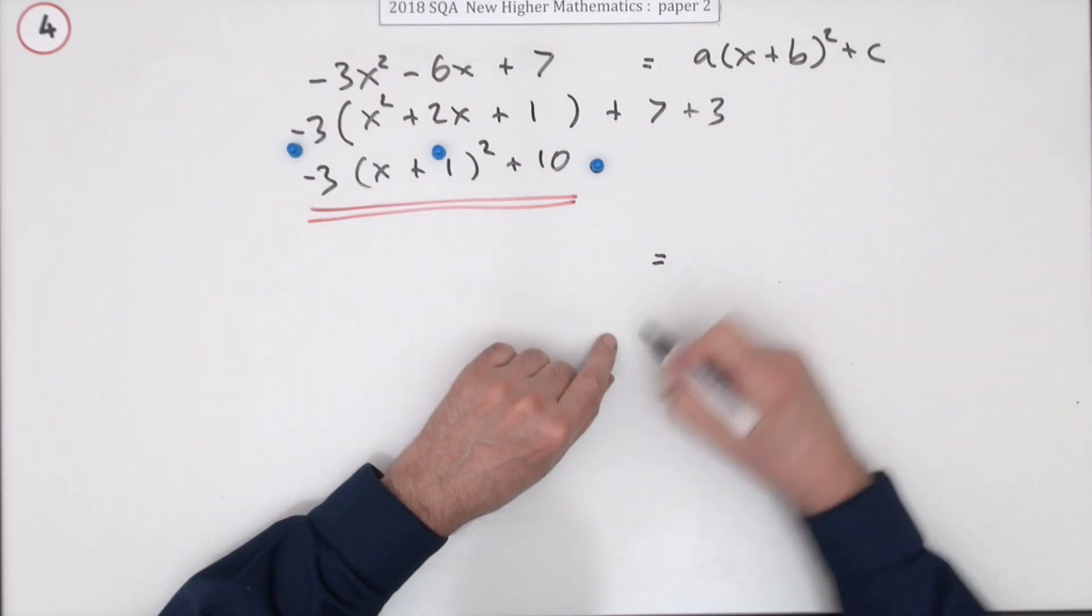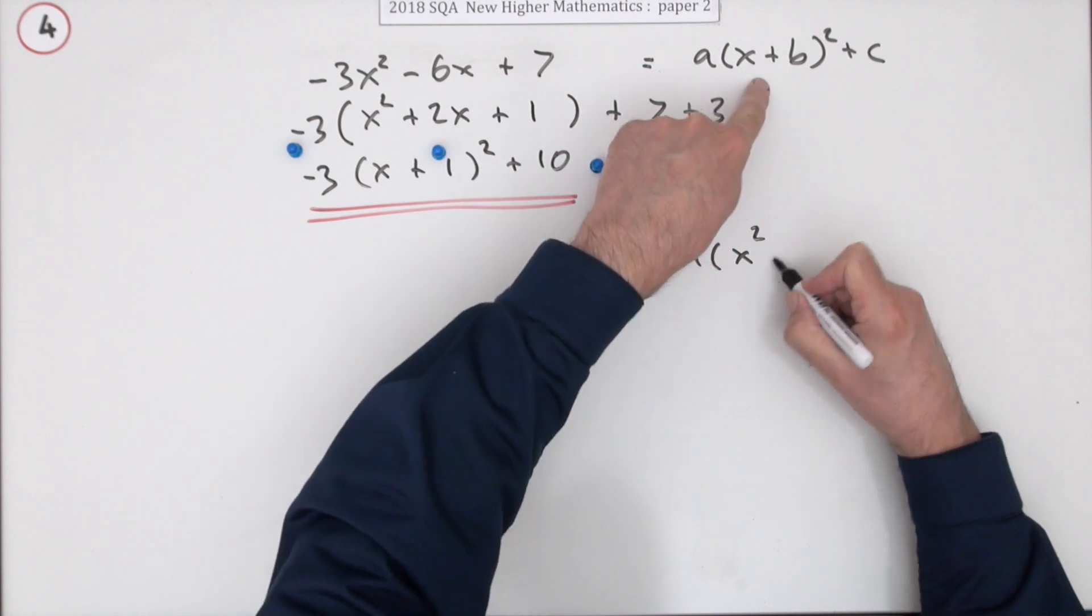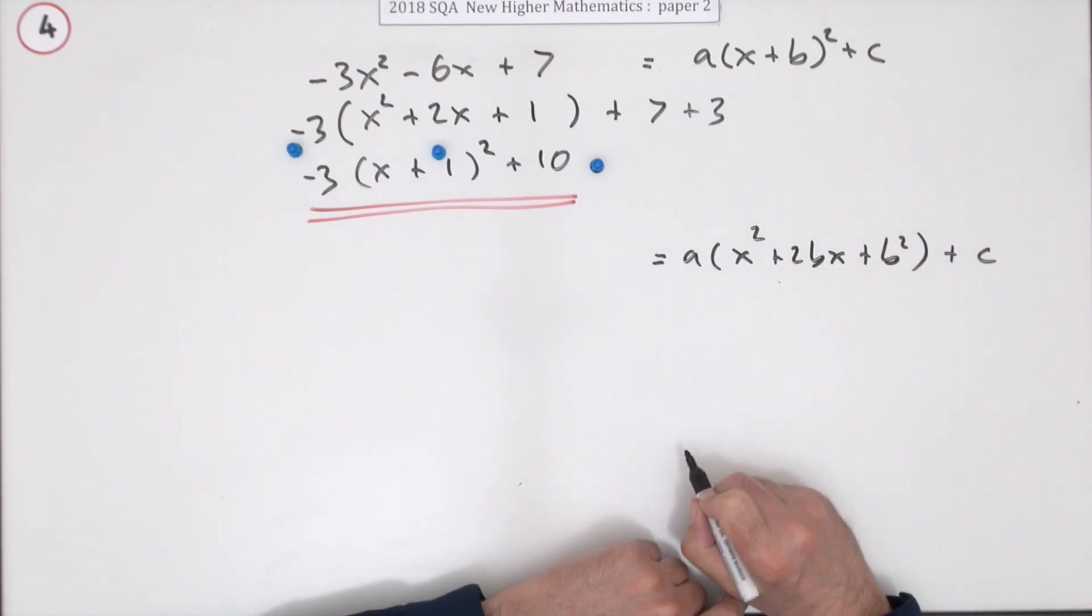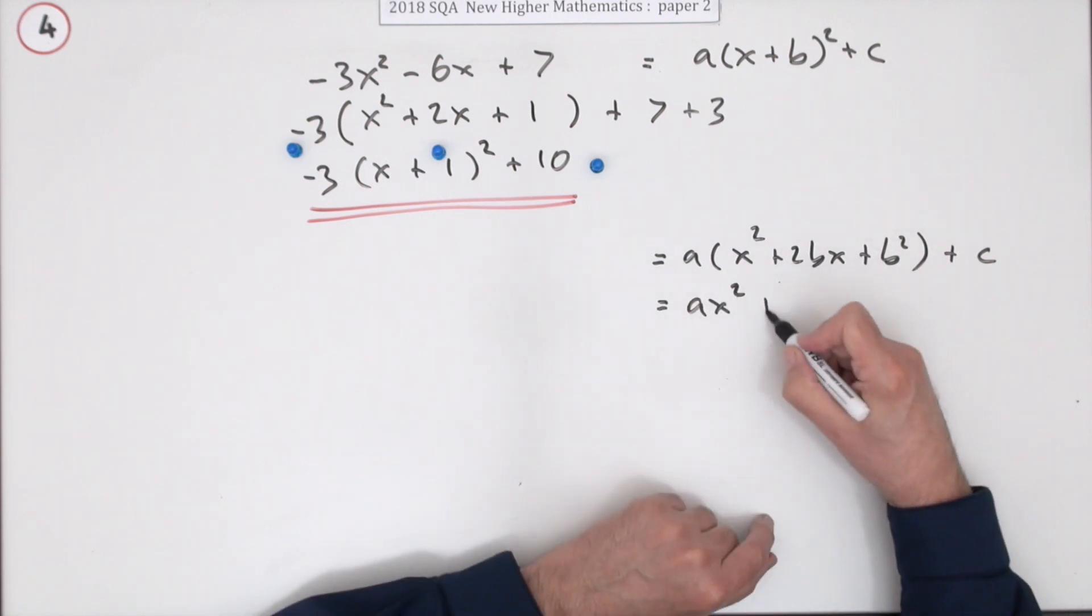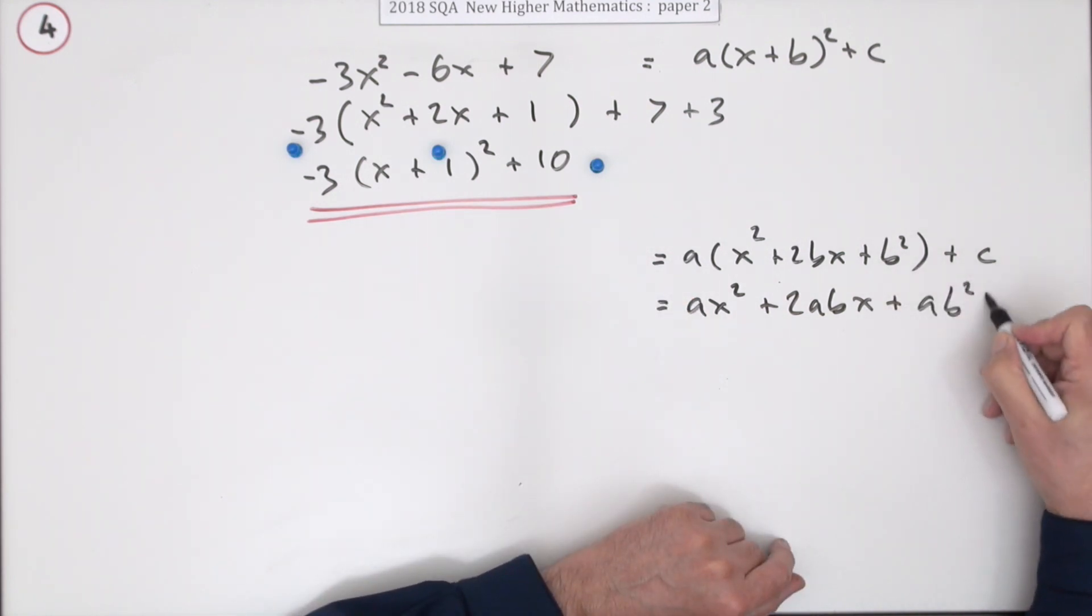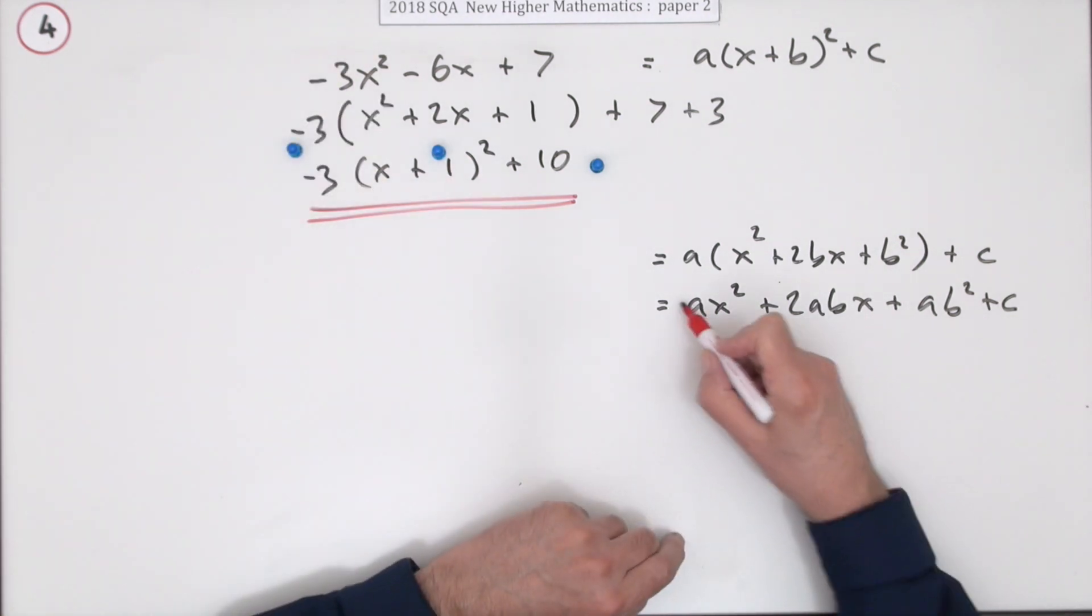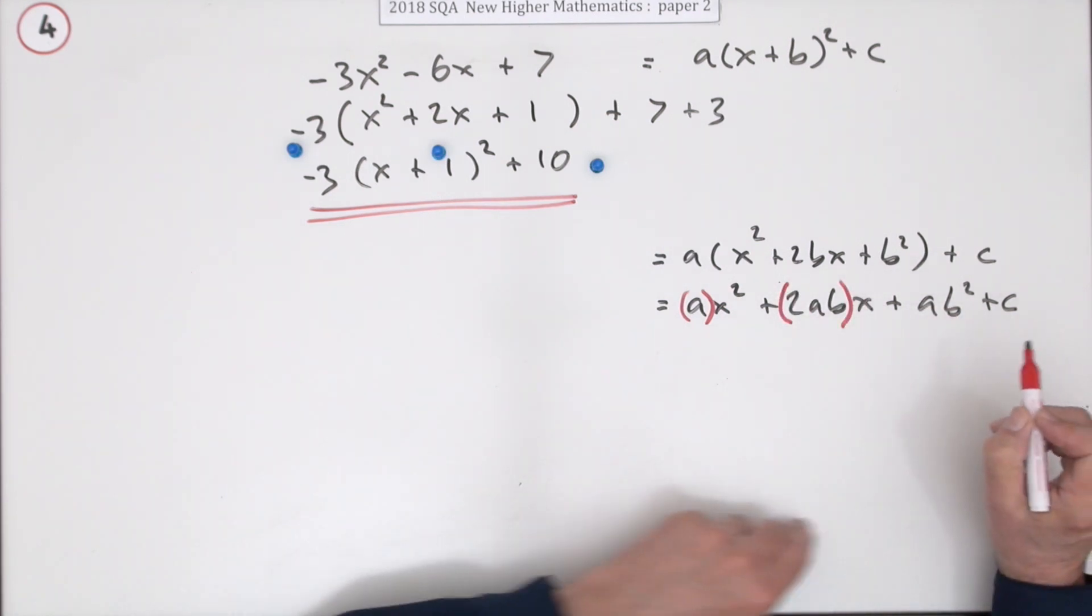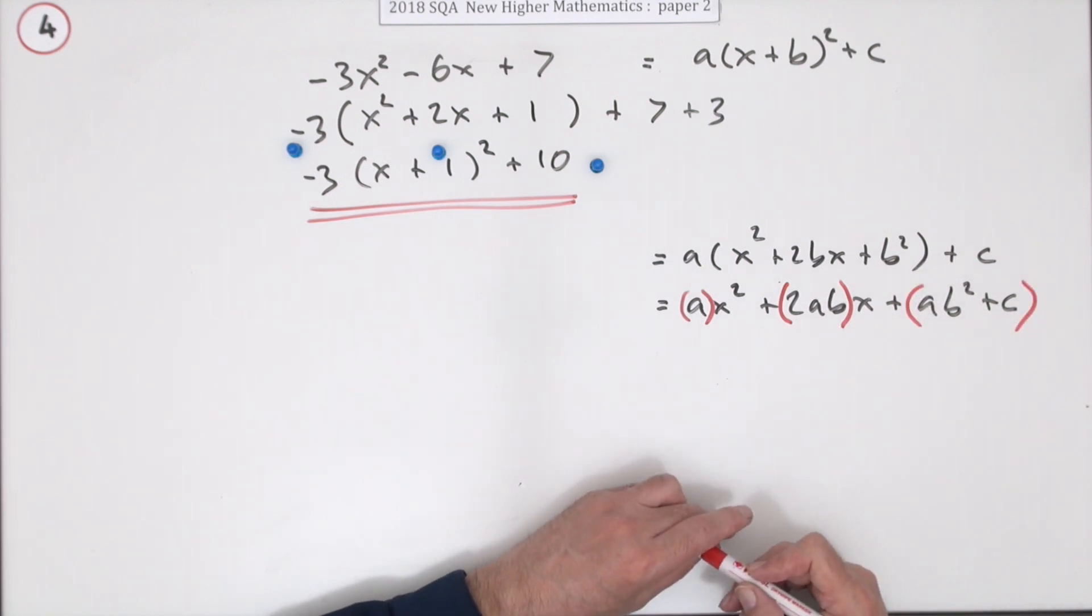There is another way of doing it, which is to expand this part. So that says you've got a times square the bracket. So you've got square the first, plus twice the product, plus square the last, plus C. And if you multiply that all out, you'll have a quadratic. You'll have ax squared. Then you'll have 2abx. Then you'll have ab squared plus C. And you'll notice in that, you've got the quadratic that matches this one, where A is obvious, where the coefficient of X is the 2ab. And the C, the constant, is ab squared plus C.